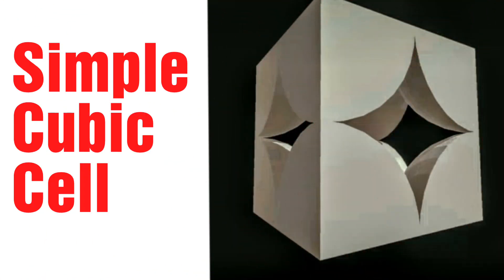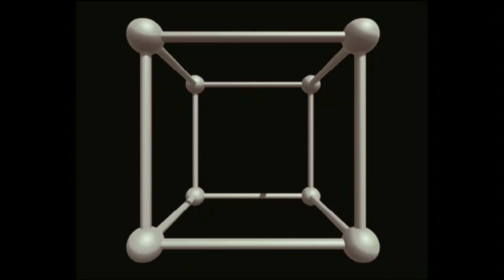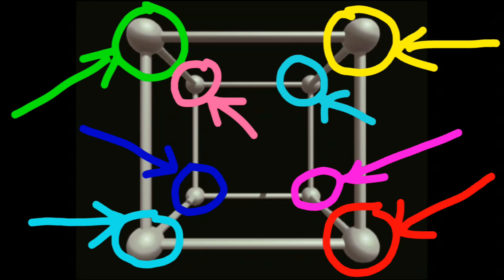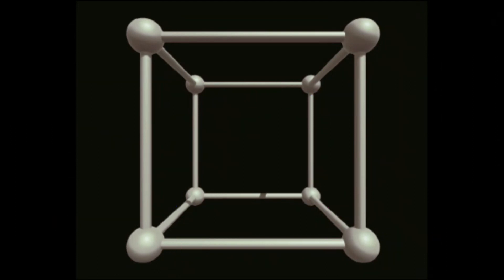Hello friends, in this video we will study the simple cubic cell. A simple cubic structure consists of eight atoms at the eight corners. The simple cubic cell looks like this from different angles.